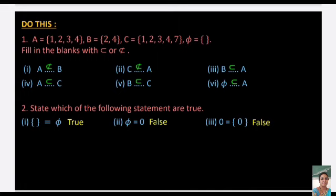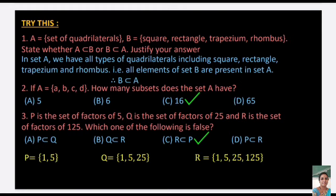State which of the following are true: φ is denoted by curly brackets — true. φ = {0} — false, because φ has no elements. {0} = 0 — false, {0} is a set containing 0 while 0 is just a number. Try this: A = set of all quadrilaterals, B = {square, rectangle, trapezium, rhombus}. Since all elements of B are quadrilaterals and present in A, B ⊆ A.